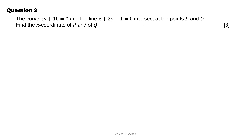Question 2. The curve xy plus 10 equals 0 and the line x plus 2y plus 1 equals 0 intersect at points P and Q. Find the x-coordinates of P and Q. 3 marks. This is an intersection question — the curve intersects with the line, so we solve simultaneous equations. Since it's a curve intersecting a line, we use the substitution method only.